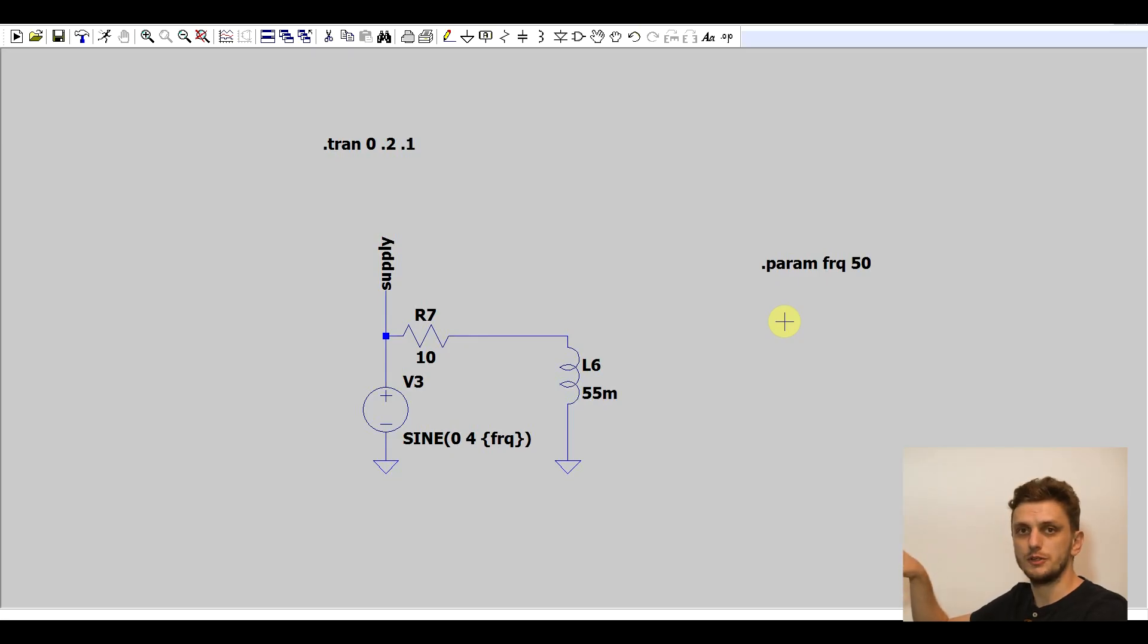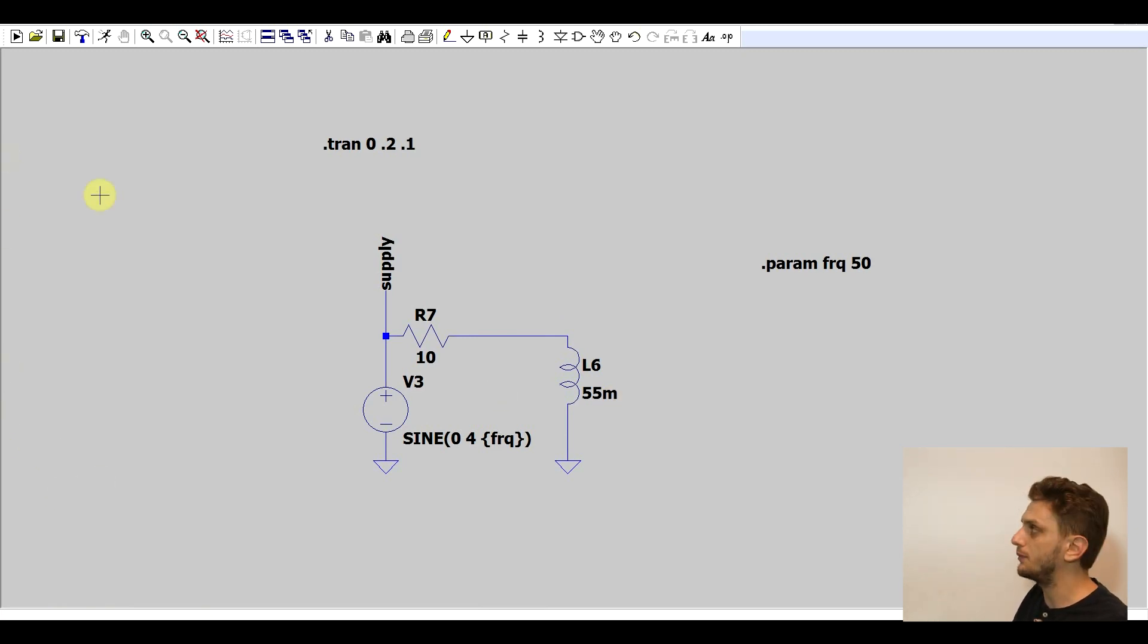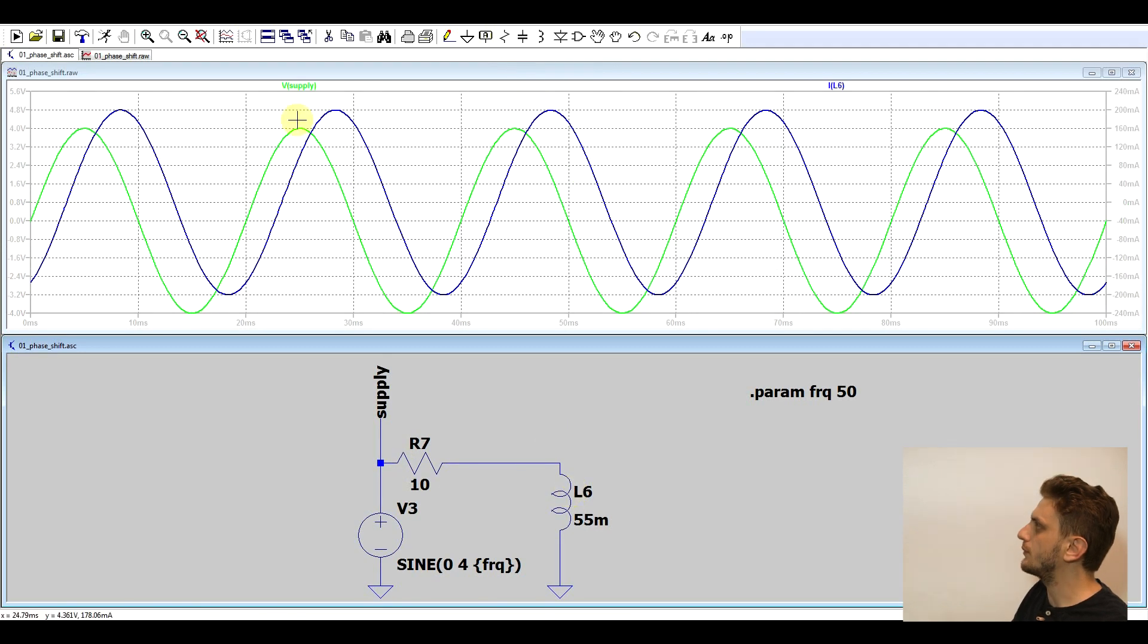So to figure out what the power factor is, we need to be able to measure this phase shift. Let's look at this in a simulation. We can start off with this really simple circuit that will mimic what we just saw practically. I got my 4 volt sine wave running at the frequency of 50 Hz, in series with a 10 ohm load, and the 55 mH inductor. This was roughly the inductance of the transformer I was using. Now if we run this thing, we see our supply voltage, and that we do get our phase shift.